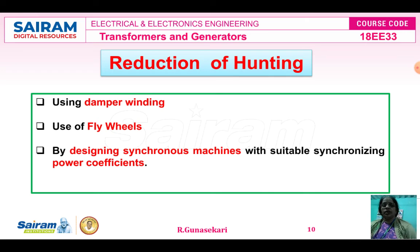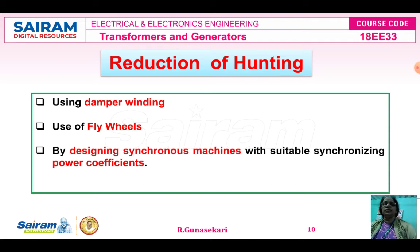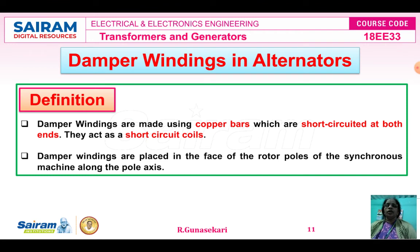To reduce hunting, we use three methods: first, using damper winding; second, using flywheels; and third, designing the synchronous generator with a suitable synchronizing power coefficient. We cannot completely remove hunting from synchronous generators, but we can reduce it using these three methods. In our syllabus, we study only about the damper winding. Before studying how the damper winding reduces hunting, we first need to know its definition.